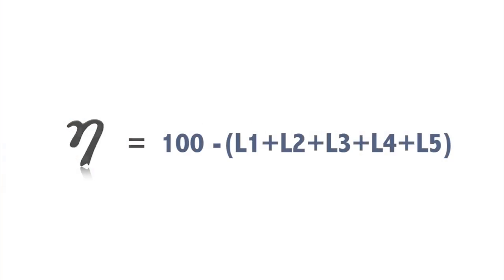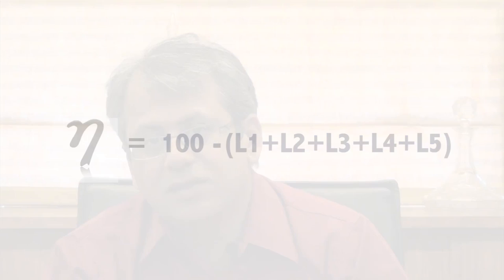Another method of determining the boiler efficiency is by actually working out all the losses that are happening in a boiler, and then 100% minus the sum of all losses would give you the efficiency of the boiler. Now both the methods give you the efficiency of the boiler. In the second method, to calculate the boiler efficiency, you need to calculate all the losses. And when you have the breakup of the losses, you know exactly which loss is contributing in a bigger way to the boiler efficiency and which loss really should not be focused upon.